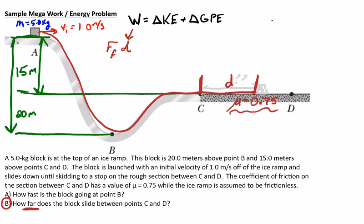The reason why that's the only displacement we have to worry about is that all of this earlier section was frictionless — our coefficient of friction was zero. The other part that a lot of people mess up is the force of friction: it's not just the coefficient of friction, it's the force of friction. So we have to use the full equation: this is actually going to be mu times n times d, where n is the normal force on the block when it gets over here.